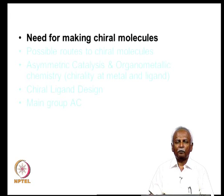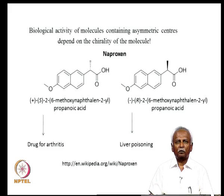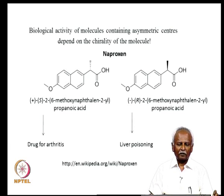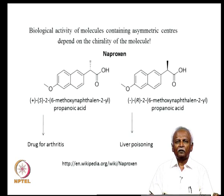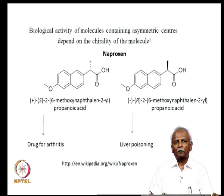If you look at the biological activity of molecules, especially those which contain an asymmetric carbon, you soon find that in many cases these molecules have different biological properties when it comes to their reaction with the body. Here are two molecules — naproxen, the R isomer and the S isomer. The S isomer is a drug for arthritis, whereas the R isomer unfortunately is a liver poison. It causes liver poisoning, and this is a serious issue because if you give the mixture of these two chiral molecules to a patient, the patient will have relief from arthritis but might die from liver poisoning.